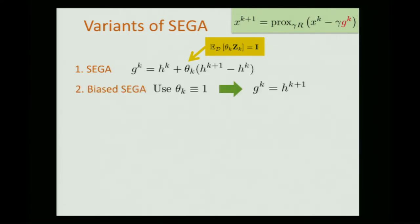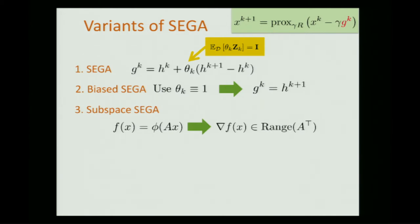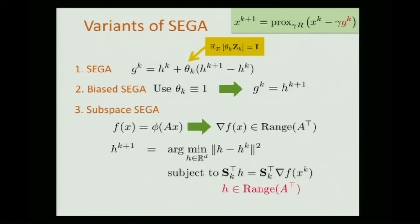There are several variants discussed in the paper. Standard SEGA uses the unbiased estimator. Biased SEGA skips the bias correction and uses H_{k+1} directly (no analysis provided). Subspace SEGA exploits the fact that if F(x) = f(Ax), the gradient lies in the range space of A^T — potentially a much smaller space than d dimensions. Incorporating this prior constraint into sketch-and-project improves performance by the ratio of the latent subspace dimension to the original dimension d. Accelerated SEGA is also available for a special case with coordinate sketches and no regularizer.